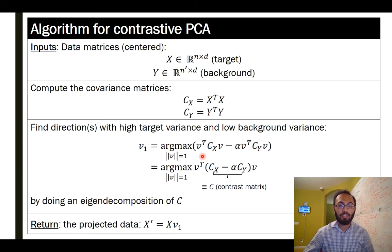So in some cases, you may be more interested in finding a vector that has a higher target variance. And in other cases, you might be more interested in finding a vector that has a lower background variance. And we'll return to this. But the nice thing is that this optimization problem can be reduced by factoring out the V transpose V. And this optimization problem can be solved efficiently by simply doing an eigen decomposition of the weighted difference.